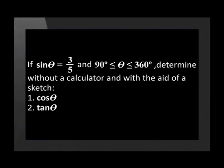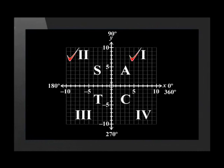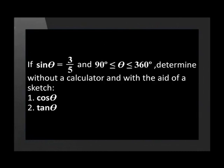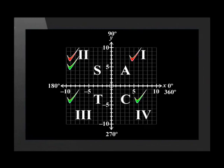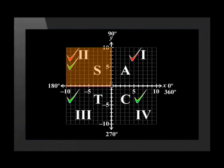According to the question, sin theta is equal to 3 divided by 5, which means that sin theta is positive. The CAST diagram tells us that sin is positive in the first and second quadrants — we mark these quadrants with red ticks. The restriction on theta is that theta is greater than 90 degrees and smaller than 360 degrees, indicating that theta may lie in Quadrants 2, 3, or 4 — we mark this with green ticks. Quadrant 2 is the only place where there is both a red tick and a green tick, so theta must lie in Quadrant 2.